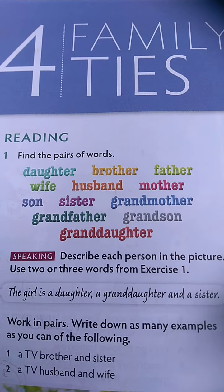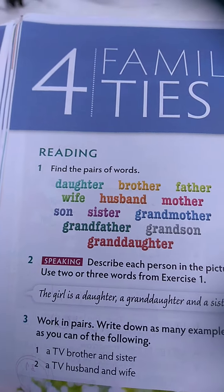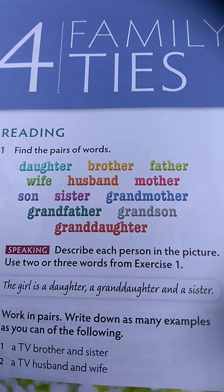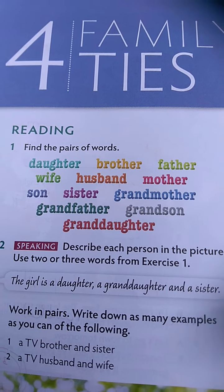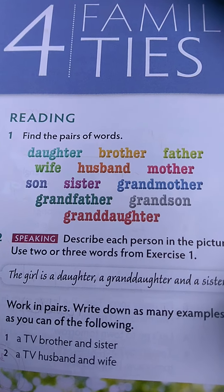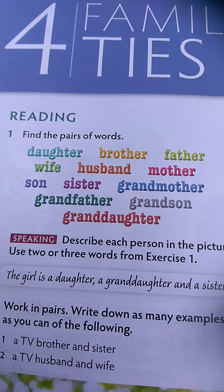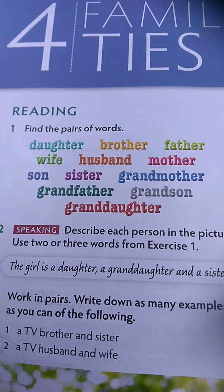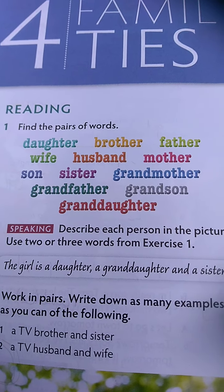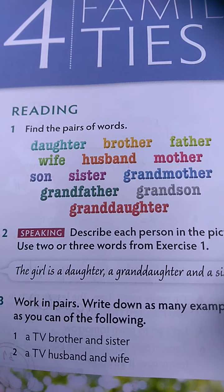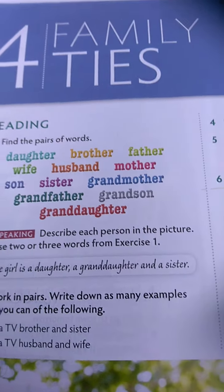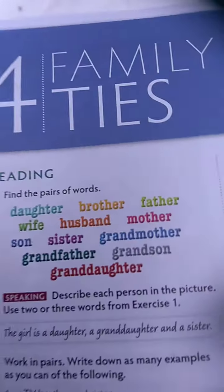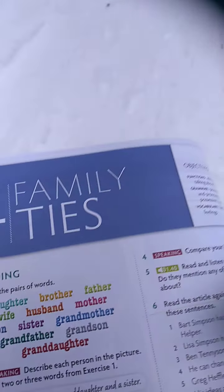Daughter means hči. Brother je brat. Father je oče. Wife, žena. Husband, mož. Mother, mama. Son, sin. Sister je sestra. Grandmother je babica. Grandfather je didek. Grandson je vnuk. Granddaughter je vnukinja.